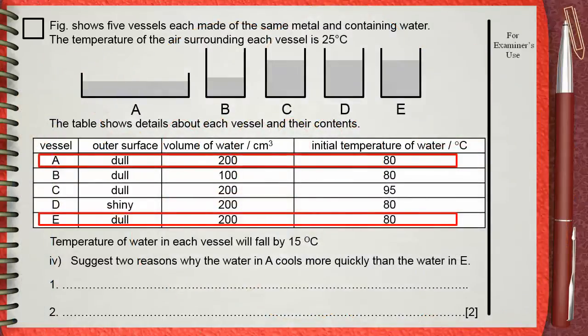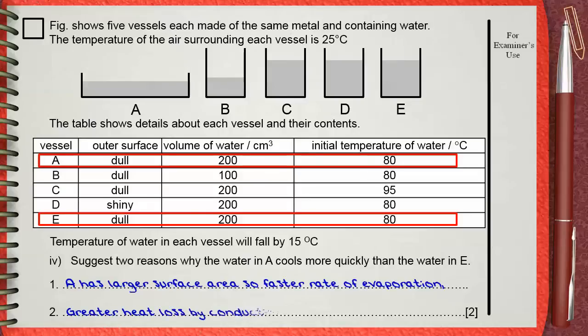So, we can say in the answer number 1: A has larger surface area, so faster rate of evaporation. Number 2: Greater heat loss by conduction. Also, you can say convection from the large surface. This is what makes A cool more quickly than E.